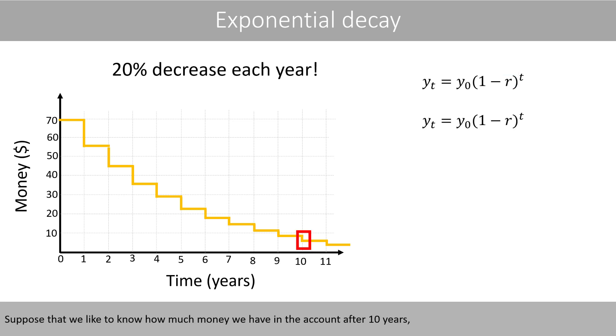Suppose that we like to know how much money we have in the account after 10 years. Then we set y0 to 70, because we start with $70, r to 0.2, because we take out 20% each year, and t to 10, because we like to know how much money we have after 10 years.